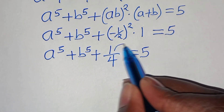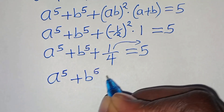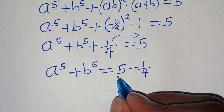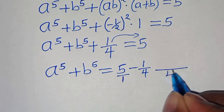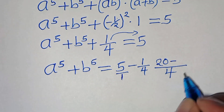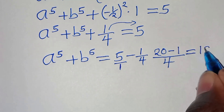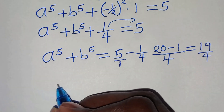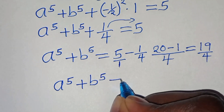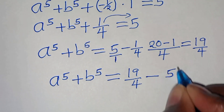Taking plus one over four to the right hand side: a to the fifth plus b to the fifth equals five minus one over four. Five is five over one, the LCM is four: four divided by one times five is twenty, minus four divided by four times one is one. So this equals twenty minus one which is nineteen over four. So a to the power of five plus b to the power of five equals nineteen over four. Let's call this equation five.